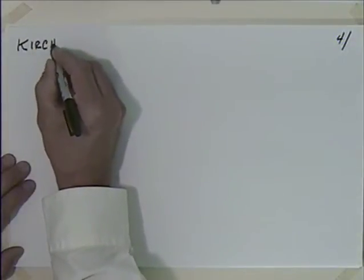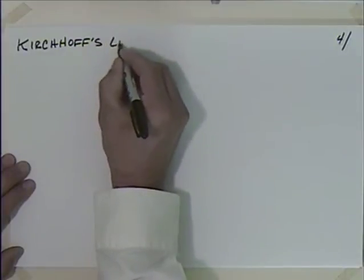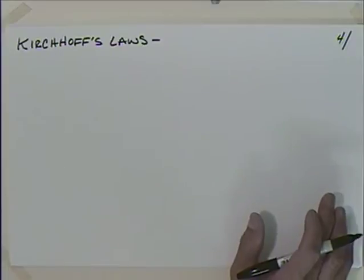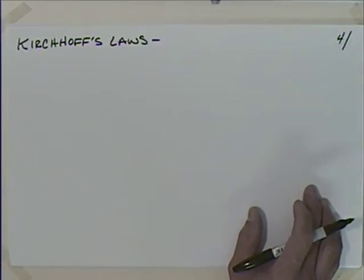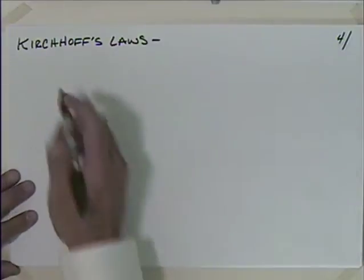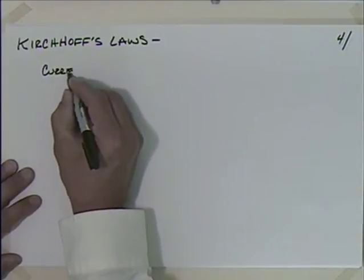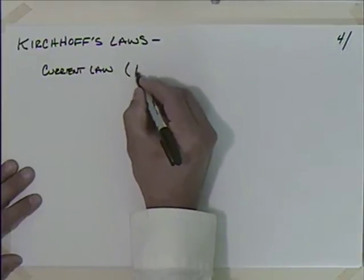Let's look at Kirchhoff's Laws — we'll use the abbreviation KCL for Kirchhoff's Current Law and KVL for Kirchhoff's Voltage Law. For KCL, imagine a variety of wires coming into a point — which we'll call a node. We might have current I1 coming in, current I2 leaving, current I3 leaving, and current I4 going in.